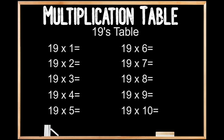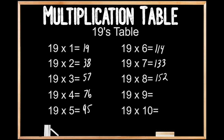19's table. 19 times 1 is 19. 19 times 2 is 38. 19 times 3 is 57. 19 times 4 is 76. 19 times 5 is 95. 19 times 6 is 114. 19 times 7 is 133. 19 times 8 is 152. 19 times 9 is 171. And 19 times 10 is 190.